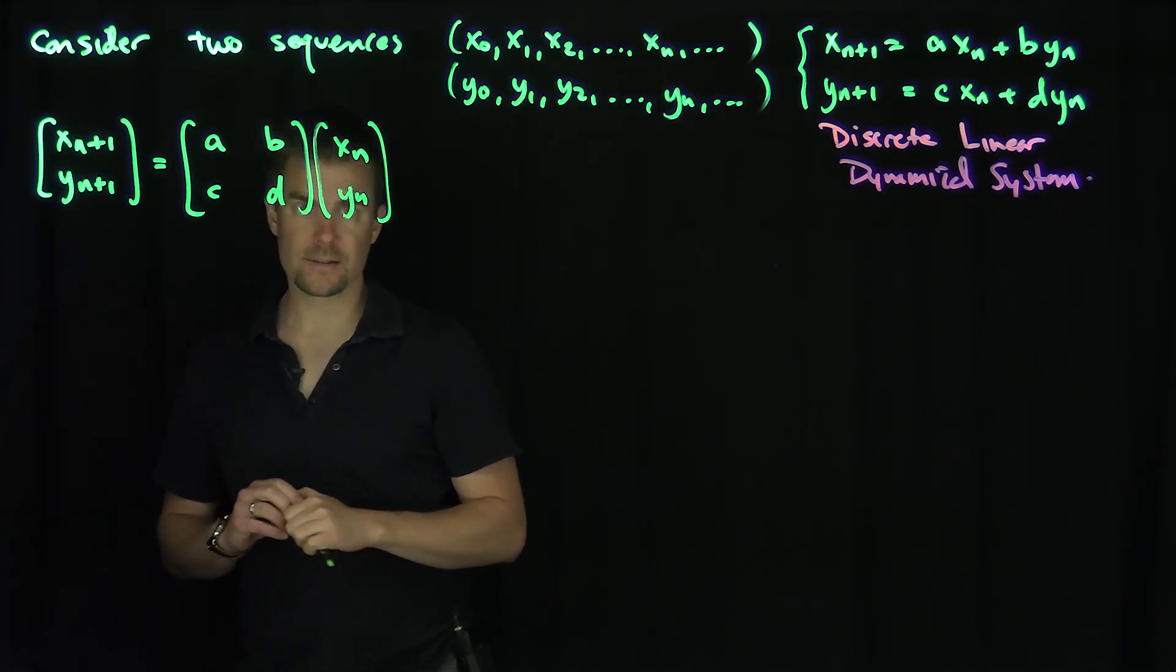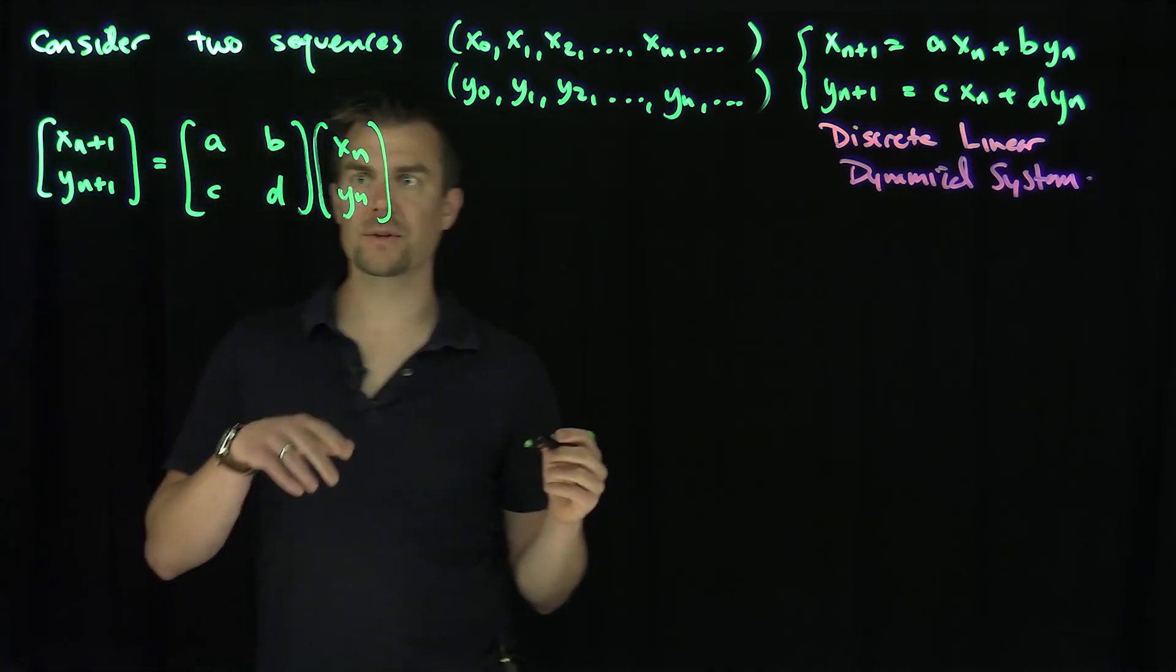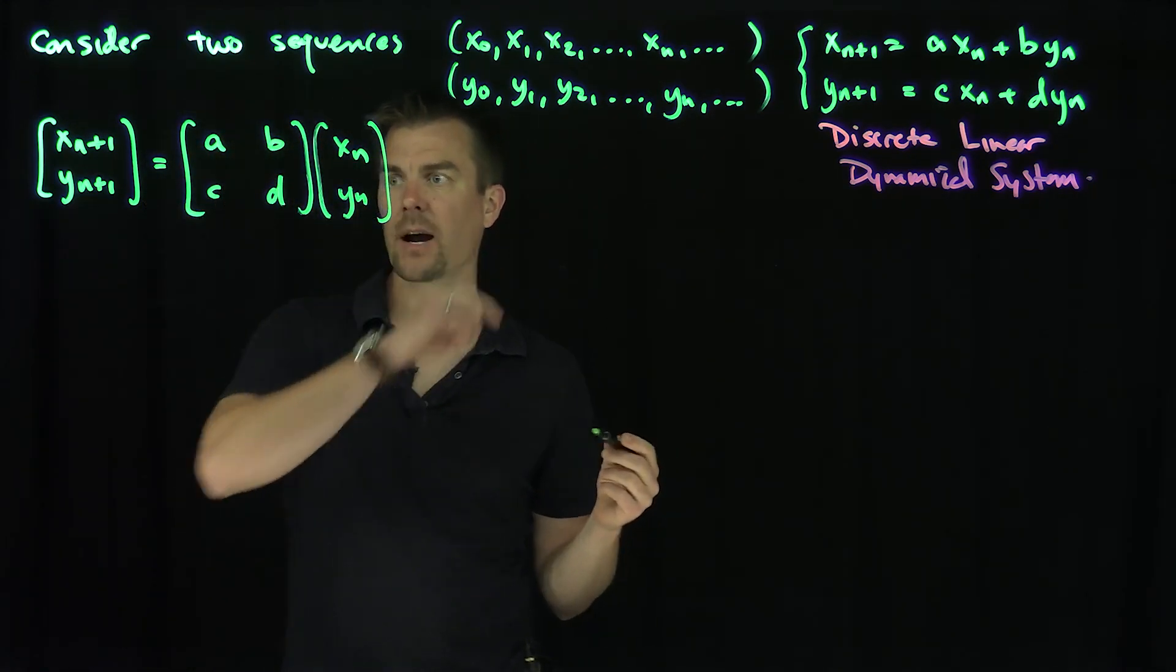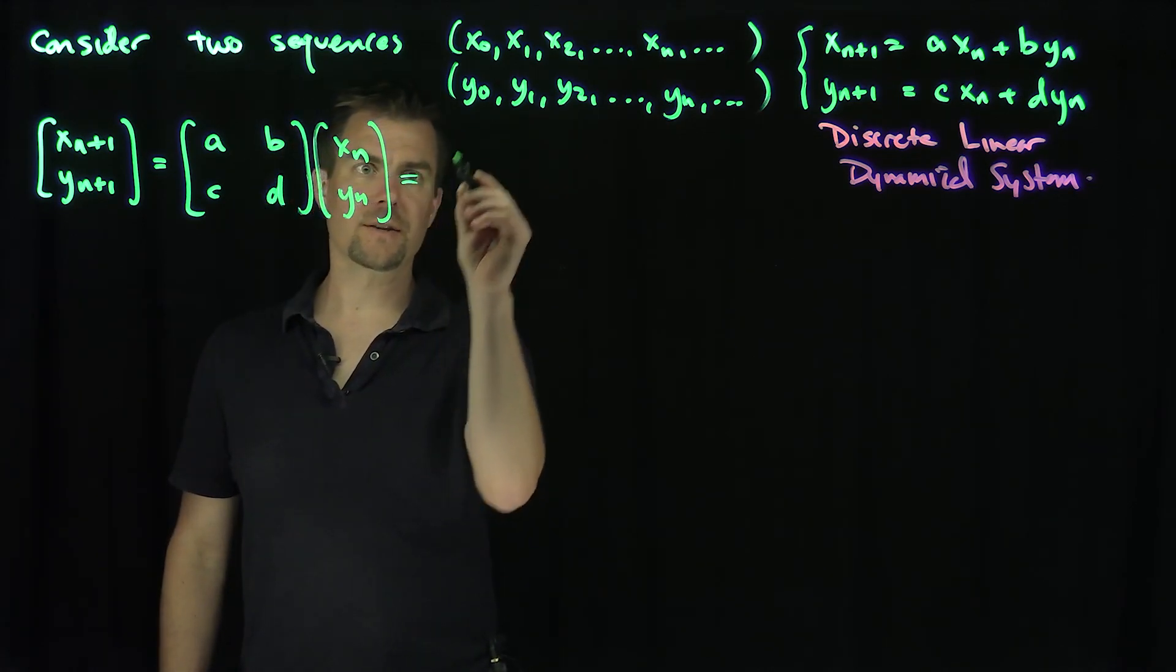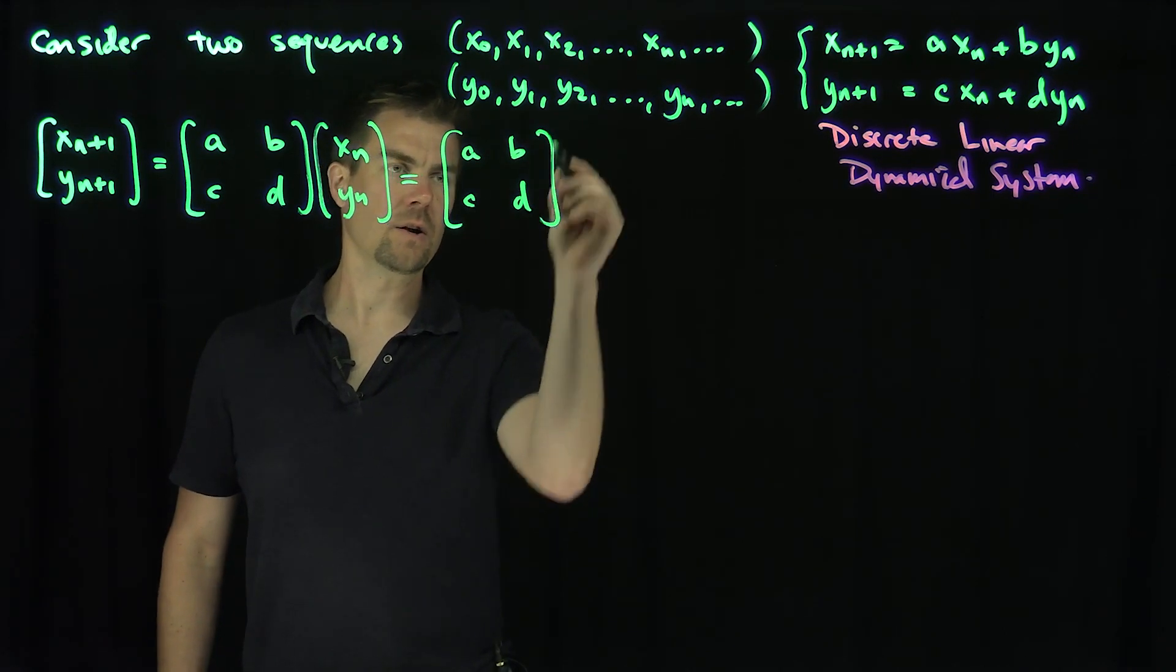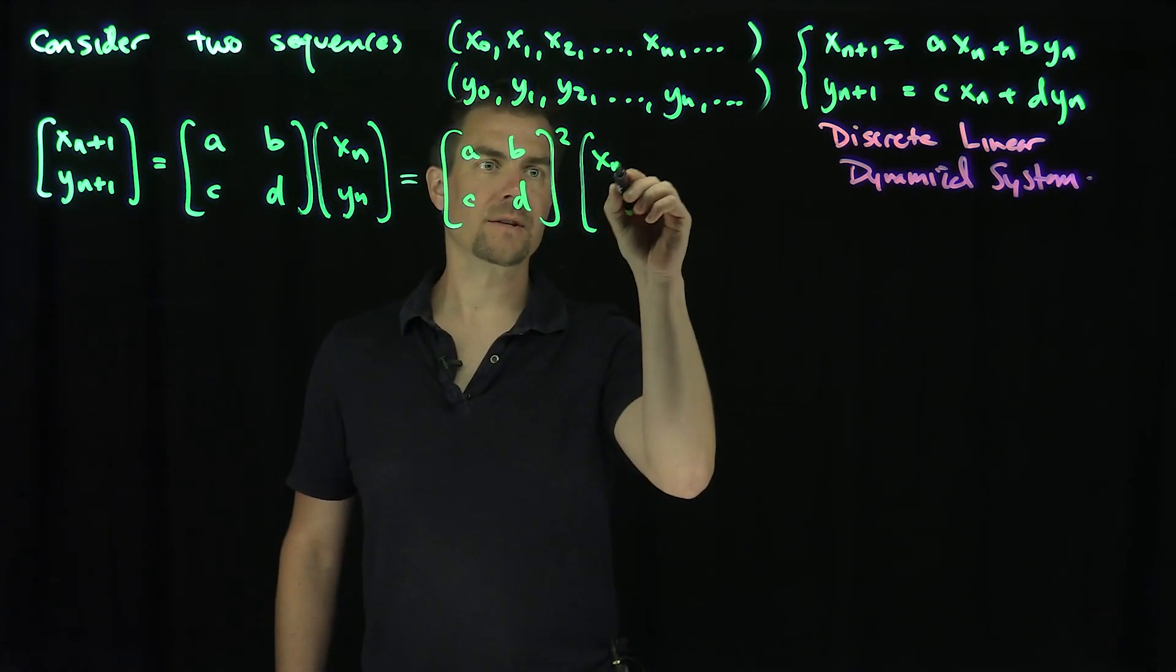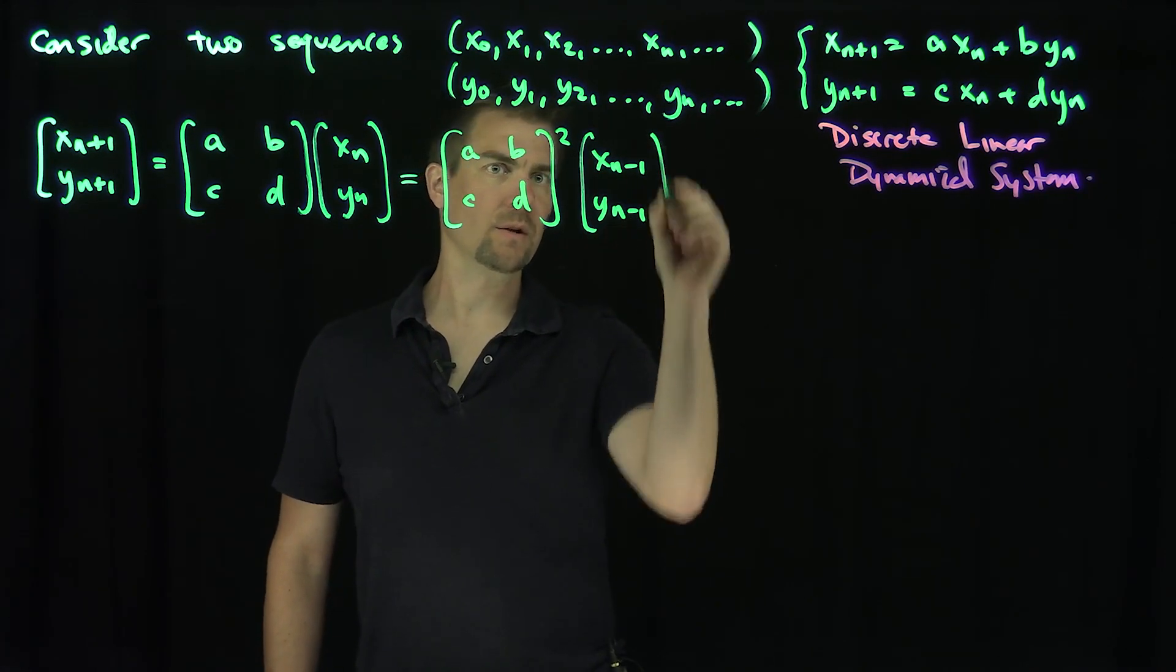And then what I can do is iterate this all the way to zero. So in particular, if I do this n times, I can apply the same recursion again and say this is going to be A, B, C, D quantity squared, and then x n minus 1, y n minus 1.